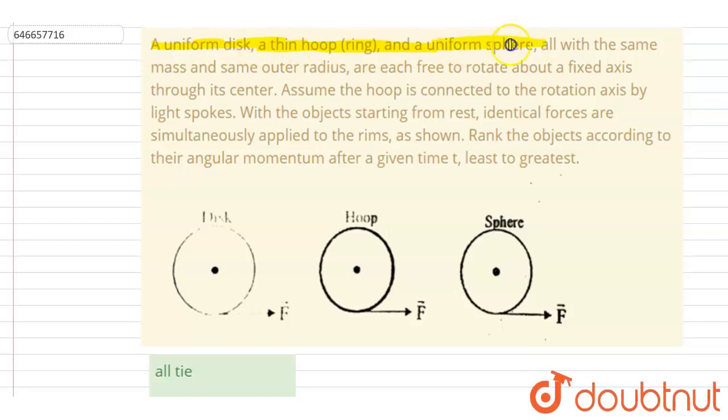thin hoop, and a uniform sphere, all with the same mass and same outer radius, are each free to rotate about a fixed axis through its center. Assume that the hoop is connected to the rotation axis by light spokes.